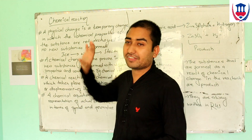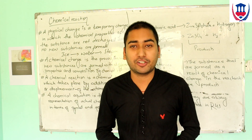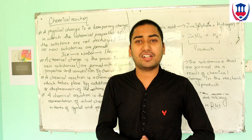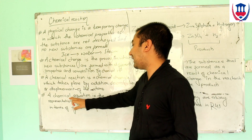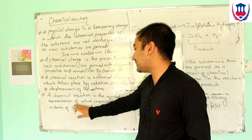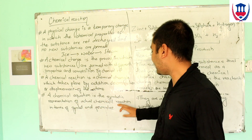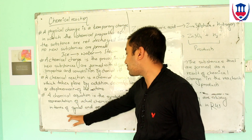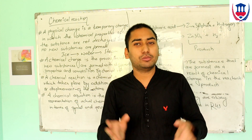A chemical equation is the symbolic representation of an actual chemical reaction in terms of symbols and formulas.